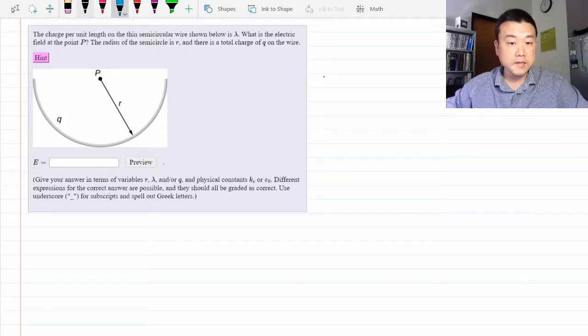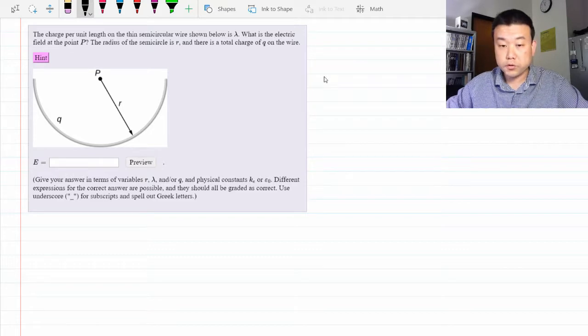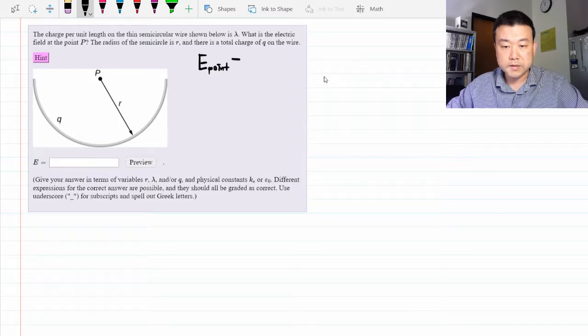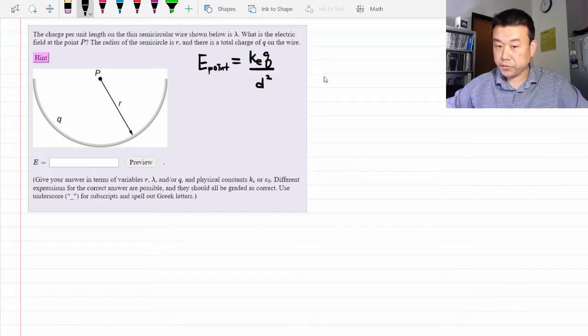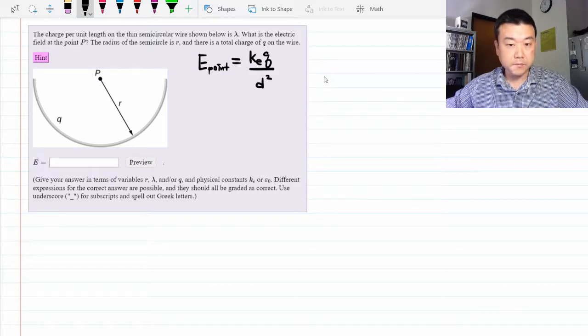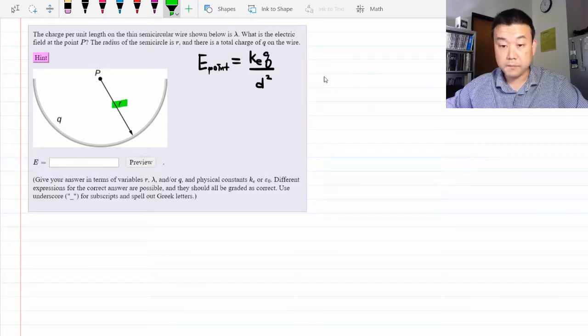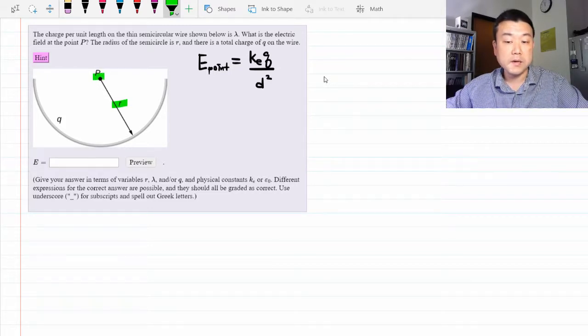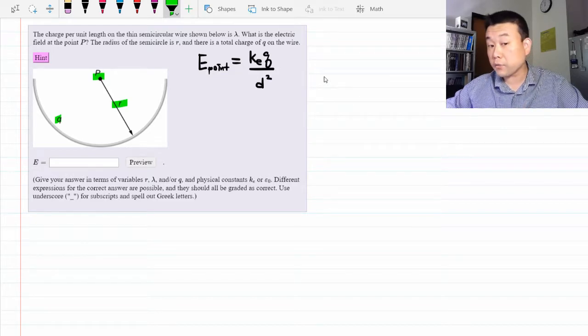So let's get started. What we are going to use is Coulomb's law, which says that electric field over a point charge is given by the Coulomb constant times the charge divided by distance squared. So you might wonder then, in this setup, isn't the distance all r? So couldn't I say electric field at point P is Ke Q divided by r squared?